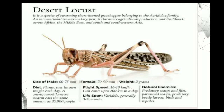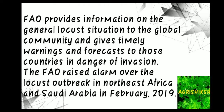Solitary desert locusts fly mostly at night, while gregarious adults fly during the daytime. Desert locusts belong to the family Acrididae and are found across Africa, the Middle East, and South and Southwest Asia. The FAO — Food and Agriculture Organization — provides information on the general locust situation to the global community, giving timely warnings and forecasts to countries in danger of invasion. The FAO raised alarm over a locust outbreak in Northeast Africa and South Arabia in February 2019.